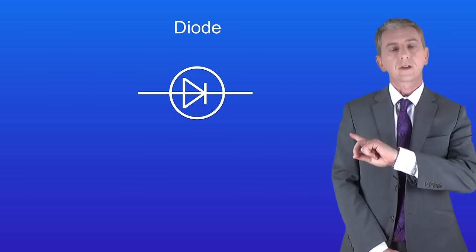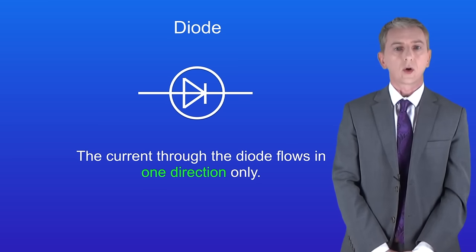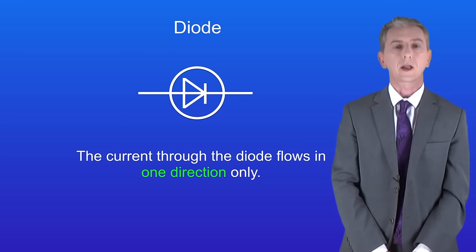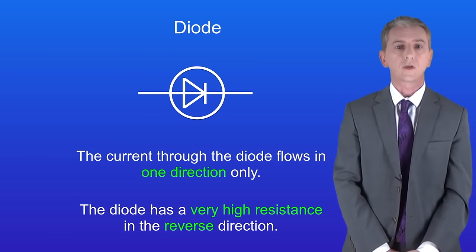So, here's the symbol for a diode, and you need to learn this. Now the key feature of a diode is that the current through the diode flows in one direction only. That's because the diode has a very high resistance in the reverse direction.